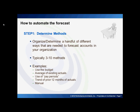The first step is to determine what forecasting methods are needed. Typically, organizations utilize anywhere from 3 to 10 methods. Some examples would include using the budget, averaging the existing actual data, using the number of pay periods in the month, or using the prior year or prior 12 months of actuals to drive data based on trends. You will also notice that one example says manual — there are definitely going to be times when certain items cannot be mathematically derived or predicted, so it's always good to provide the ability to manually enter data if needed.